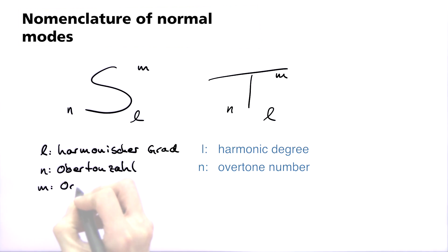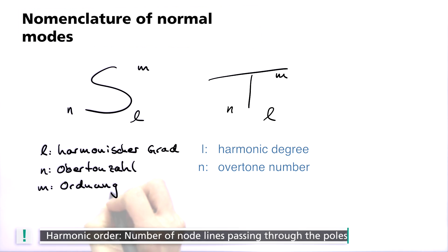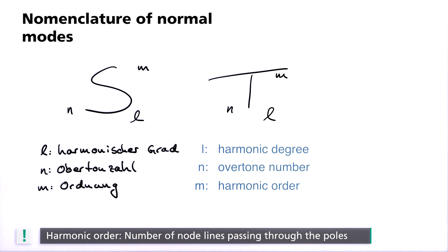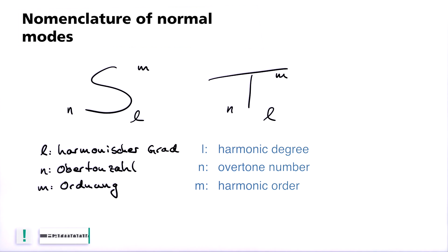The third index is the harmonic order M. It represents the number of node lines which pass through the poles. For toroidal modes, L and M describe the number of curls that make up the horizontal torsions. For an idealized Earth, that means symmetrical sphere, the value of M does not change the eigenfrequency of the mode, which is why this index is often not specified.